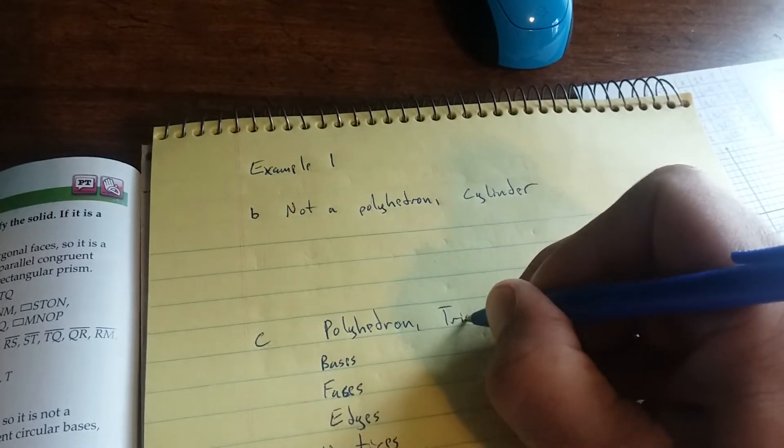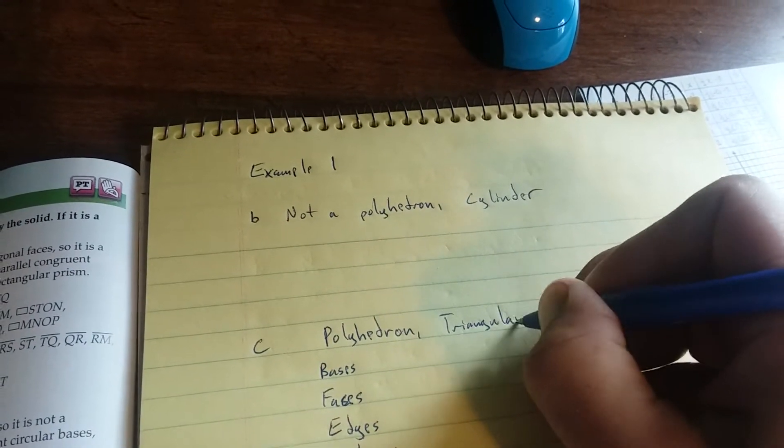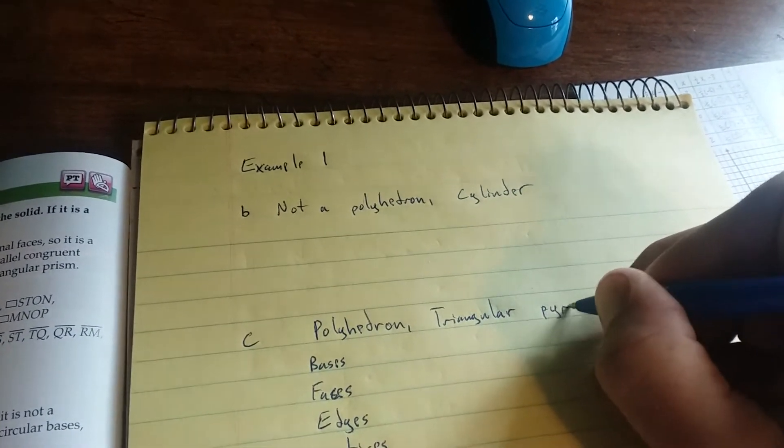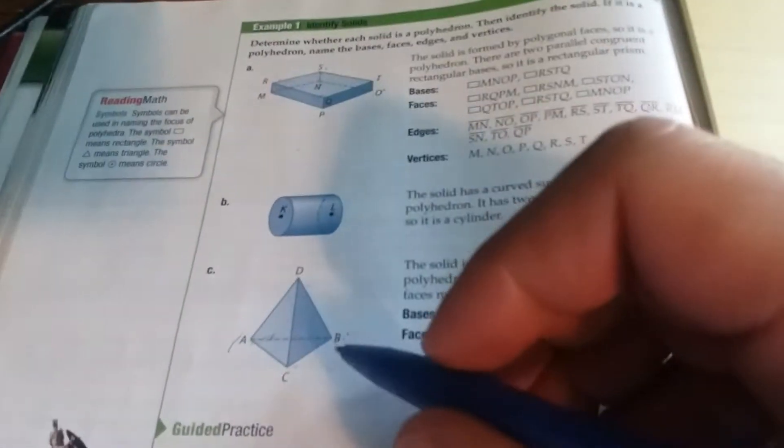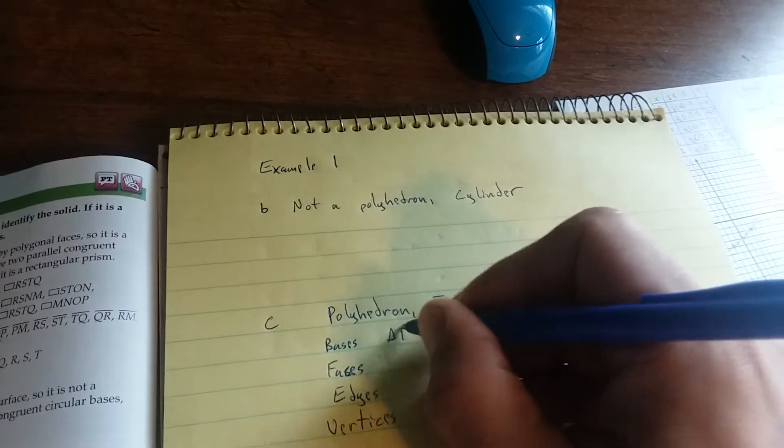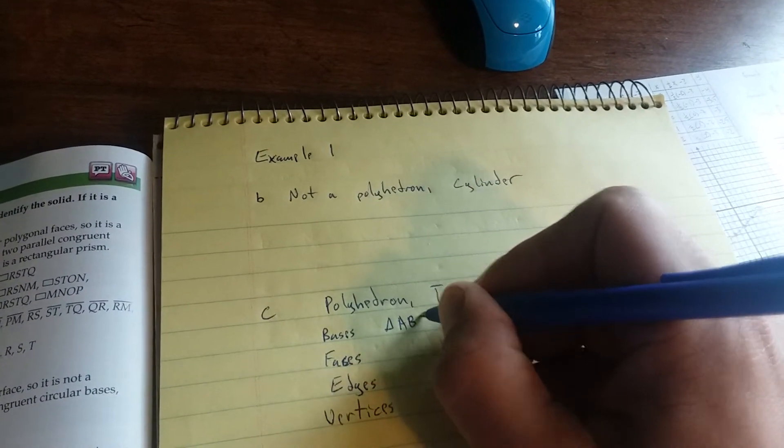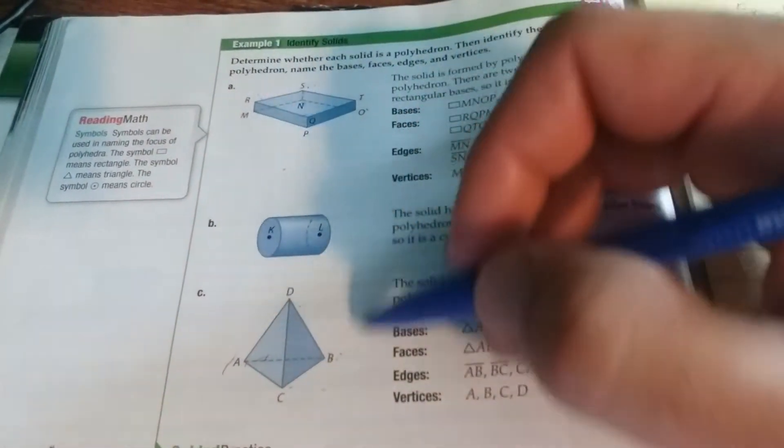then it is a triangular pyramid. The base is actually just one base, it's triangle ABC. The faces, I'm just going to start